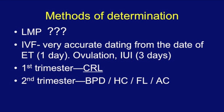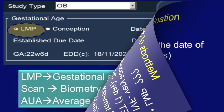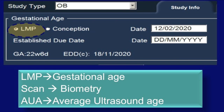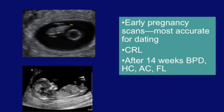In the first trimester, CRL is the measurement used to determine gestational age. In the second trimester, different parameters like BPD, HC, FL, and AC are used. Typically when the patient comes for ultrasound, LMP is the first thing entered in the patient data entry system to get a gestational age. A scan is performed, biometry is done, and the average ultrasound age is obtained. Early pregnancy dating by CRL is the most accurate; after 14 weeks, different measurements are taken.